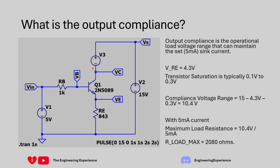This means the circuit will deliver a fixed 5 milliamps until the load voltage reaches 10.4 volts. If the load is a resistor, the maximum load resistance is 10.4V ÷ 5 mA = 2080 ohms. Above 2080 ohms, the circuit can no longer maintain 5 milliamps. Below 2080 ohms, the output current is fixed at 5 milliamps, within the tolerance of the NPN transistor and components.